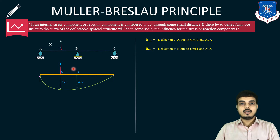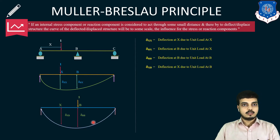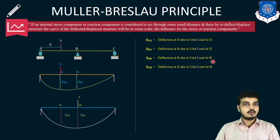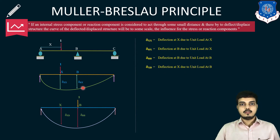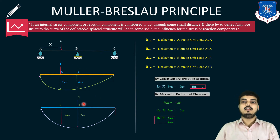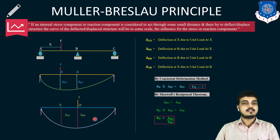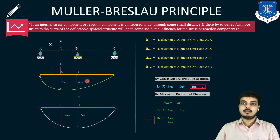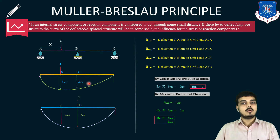Now if we apply the unit load at point B instead, the deflection below B will be δ_bb — deflection at B due to unit load at B — and the deflection at x will be δ_xb — deflection at x due to unit load at B. This is the effect of loads applied one by one at point x and point B. With the help of these two relations we can form an equation by the consistent deformation method, which states: R_B × δ_bb = δ_bx.